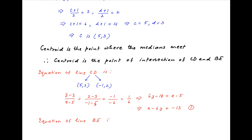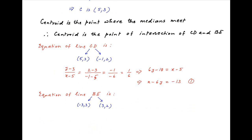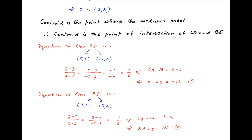Similarly, the equation of median BE, the line joining (-3, 3) and (3, 2), can be written as (y - 2) / (x - 3) = (3 - 2) / (-3 - 3). The right-hand side equals -1/6. Cross-multiplying, we get 6y - 12 = 3 - x, and therefore x + 6y = 15. Let's call this equation 2.